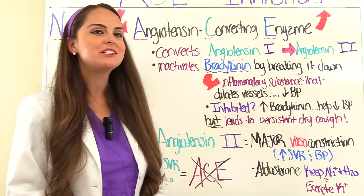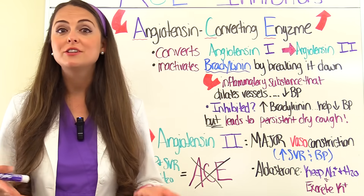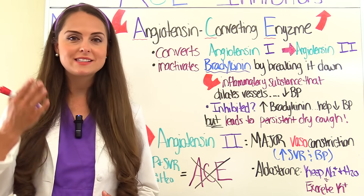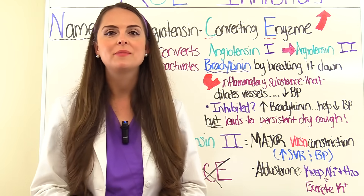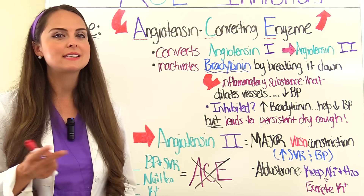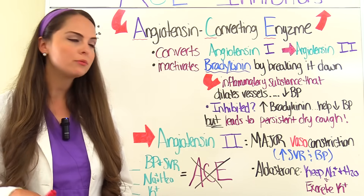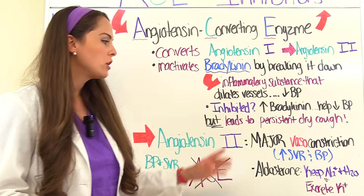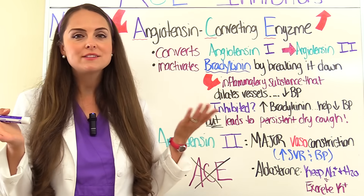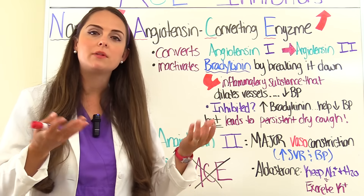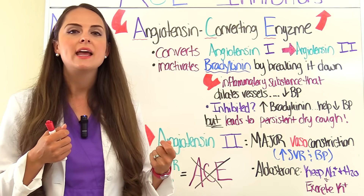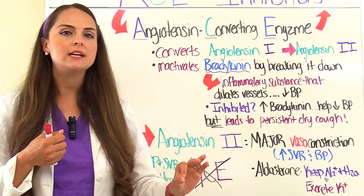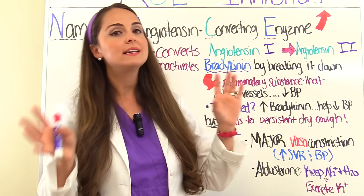Angiotensin II is a major vasoconstrictor — when vessels constrict, it increases systemic vascular resistance and blood pressure. Another thing angiotensin II does is trigger the release of aldosterone, which influences the kidneys to retain sodium and water, increasing blood volume and pressure even more. While sodium and water are retained, the kidneys excrete potassium.